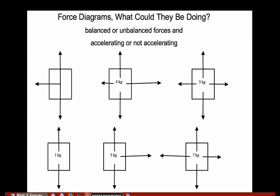Coming to the end now. This next diagram — the net force is to the right, so it's unbalanced, therefore it's accelerating, either speeding up or slowing down. If it's going to the right and the net force is to the right, it's speeding up — something is pushing it in the direction it's going. If this thing was moving to the left and the net force is to the right — opposite direction — then it would be slowing down.